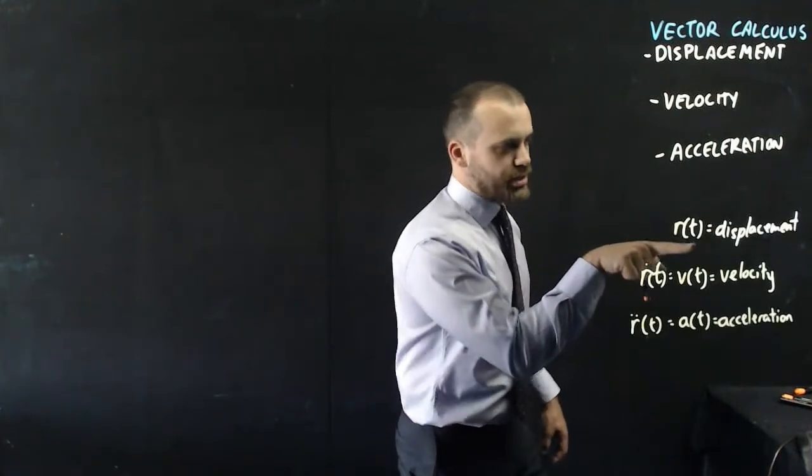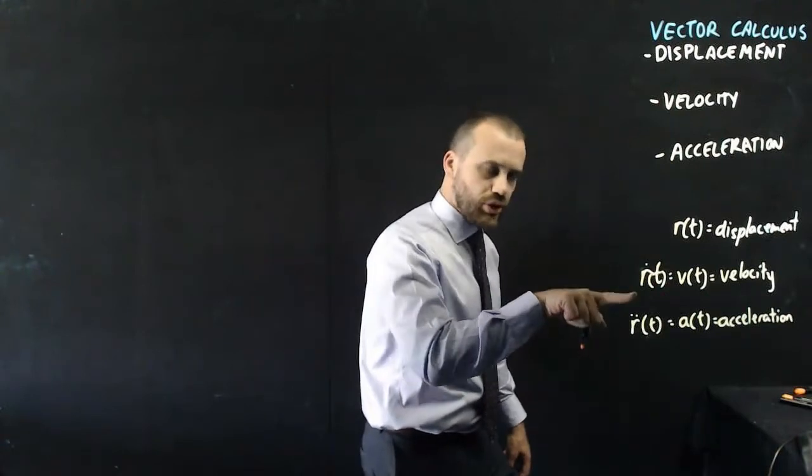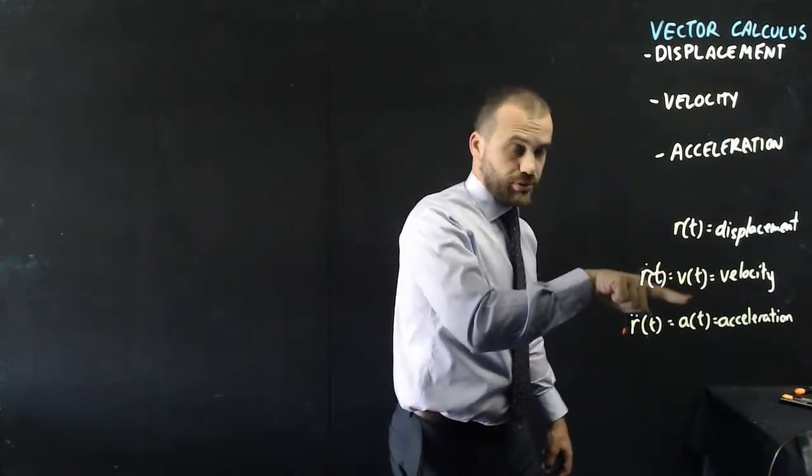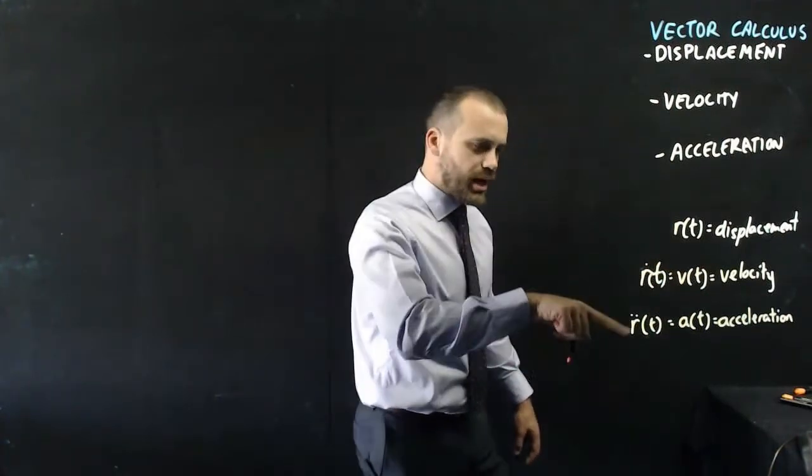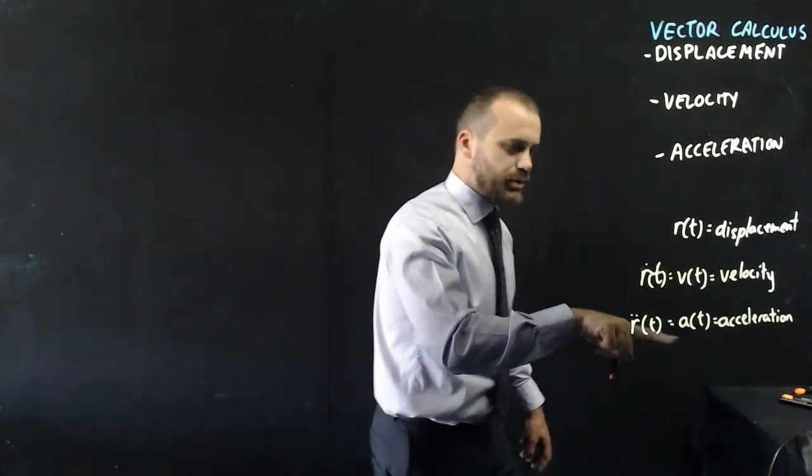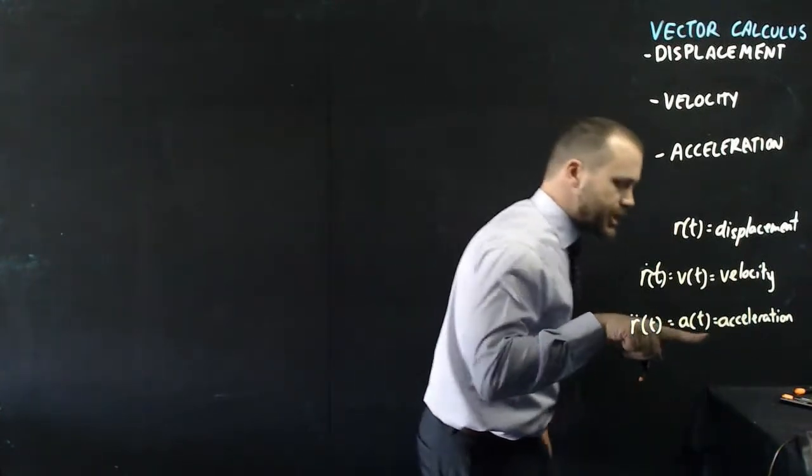That is, if r with respect to t equals displacement, then r dot with respect to t equals v with respect to t, which is velocity, and r double dot with respect to t equals a with respect to t, which is acceleration.